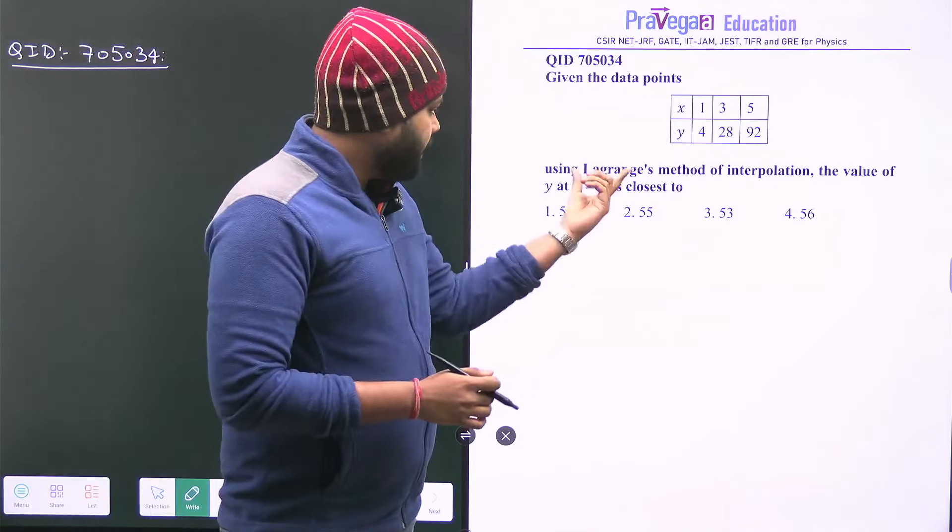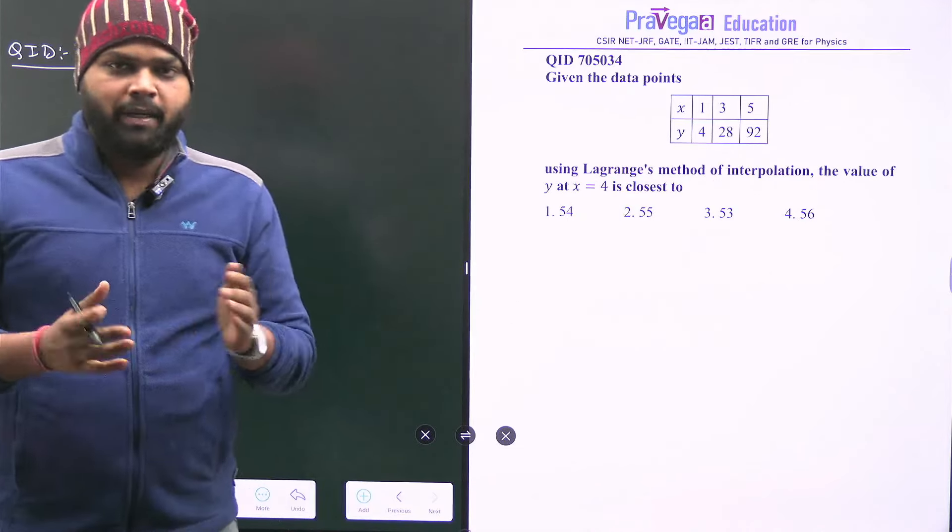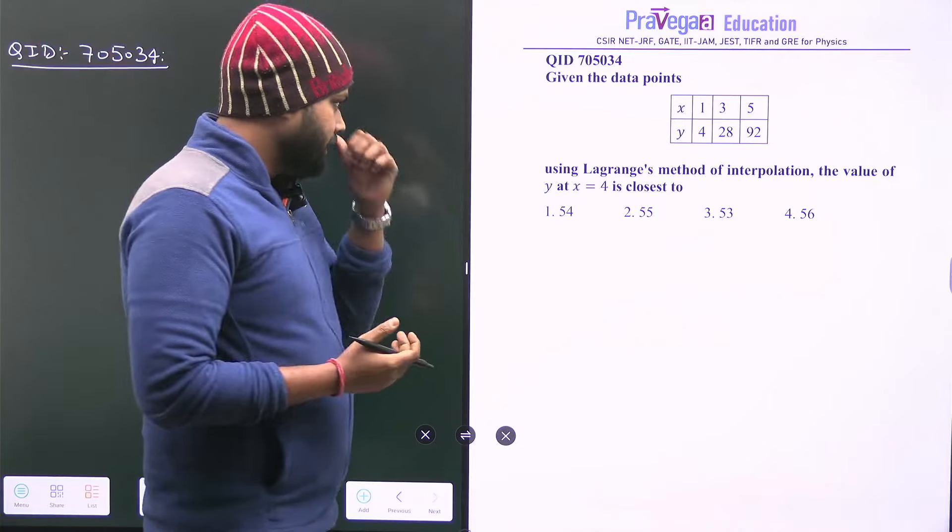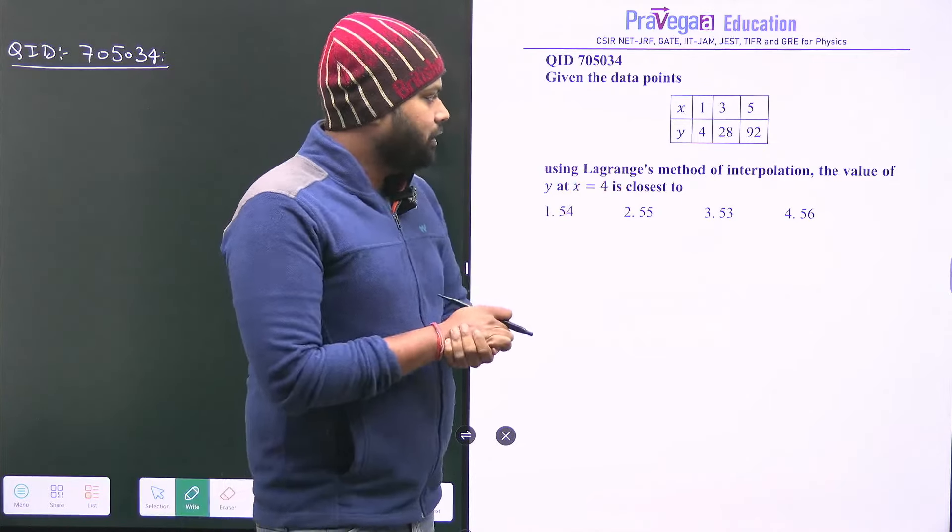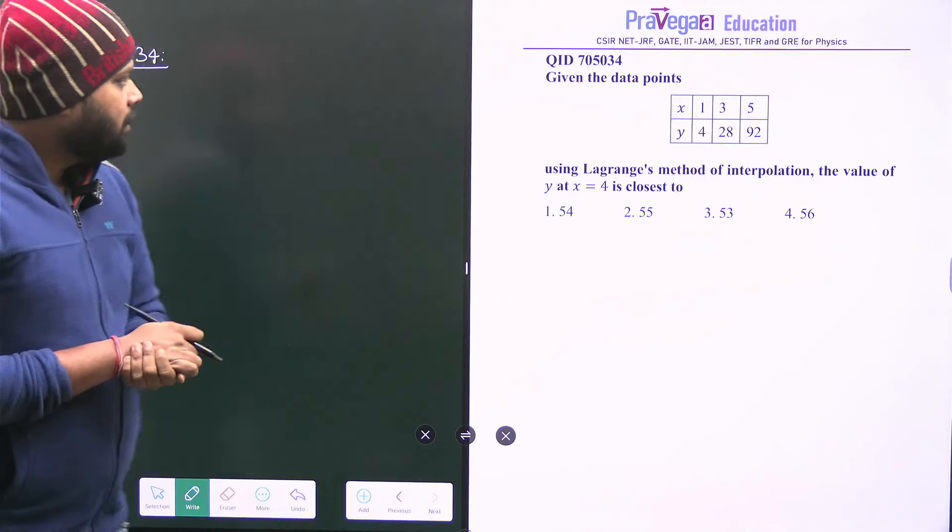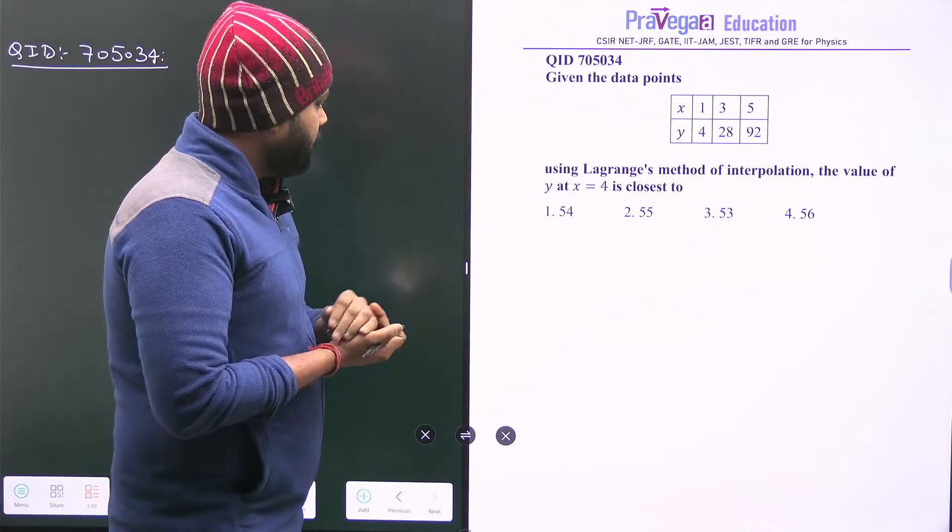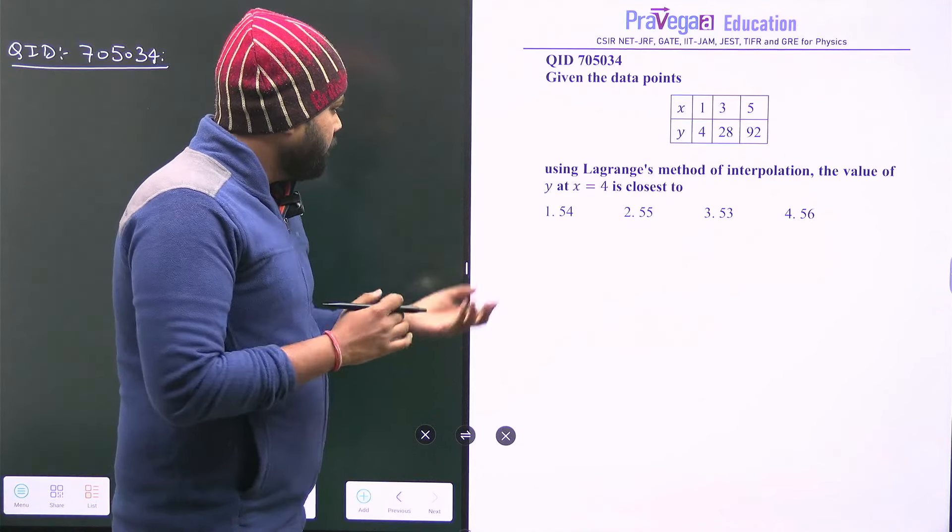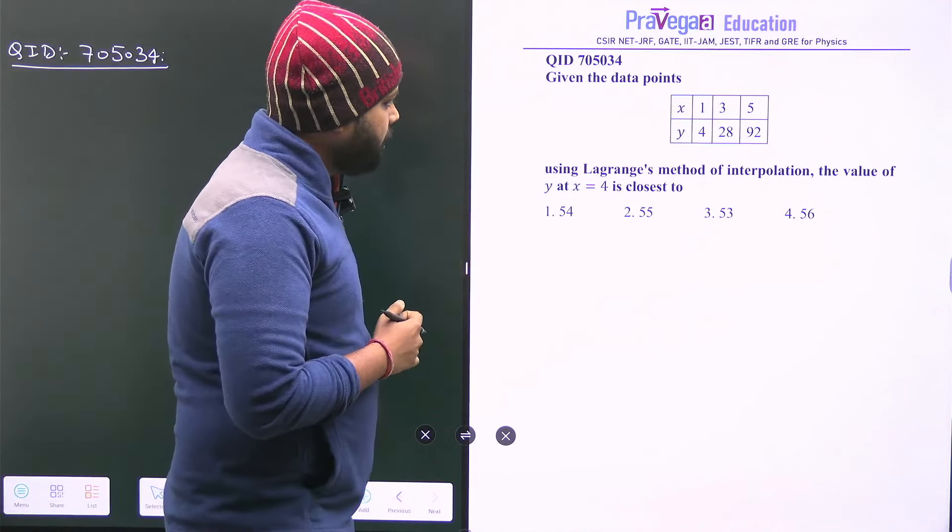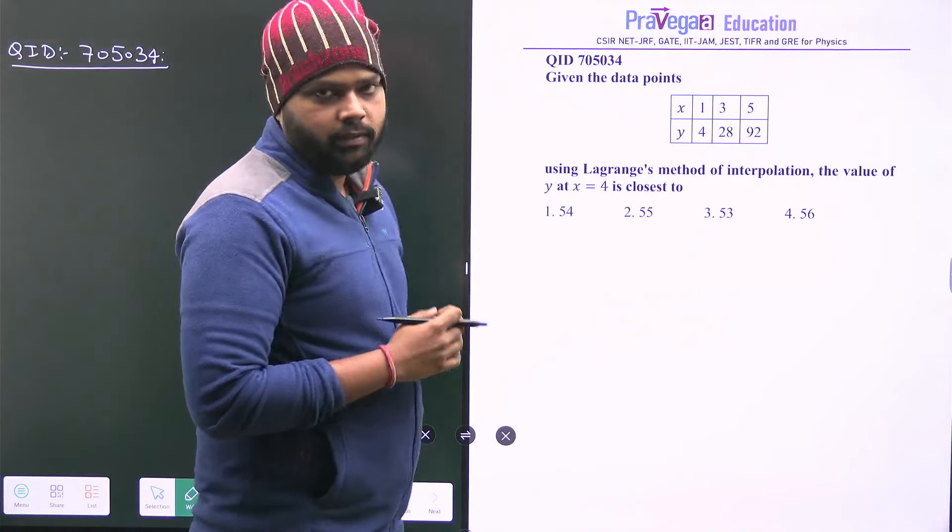Interpolation method, Lagrange's method of interpolation. In very simple language, you can say that basically this question will be solved using Newton's forward difference method. The data is given and the question is asking that using Lagrange's method of interpolation, the value of y at x equals 4 is closest to.